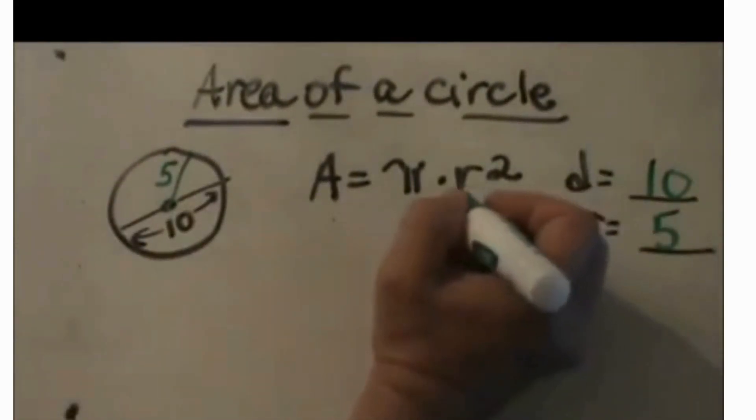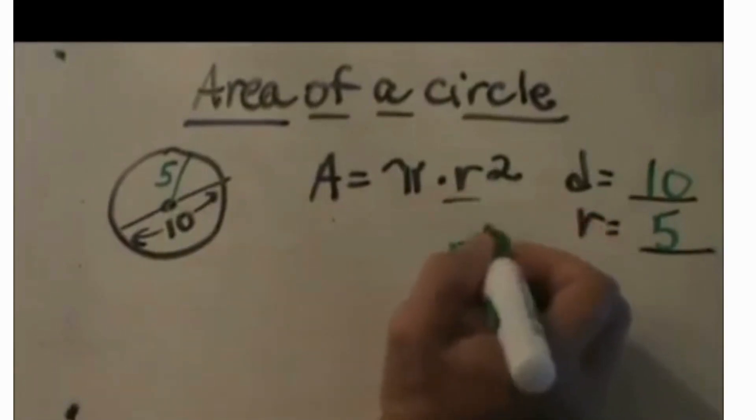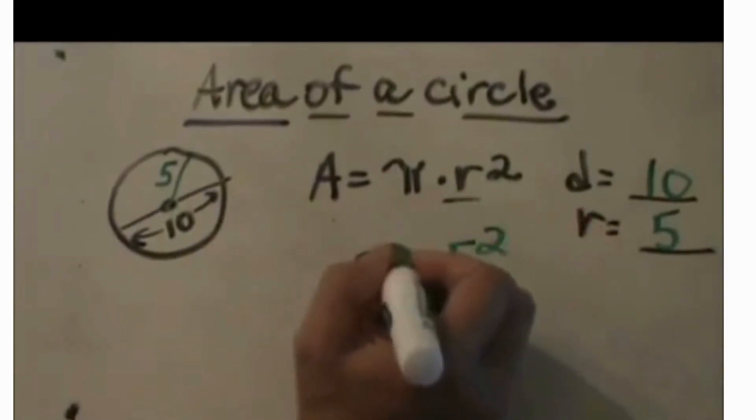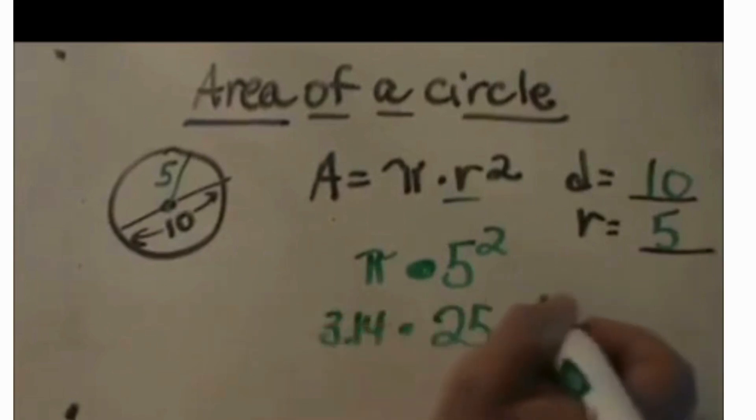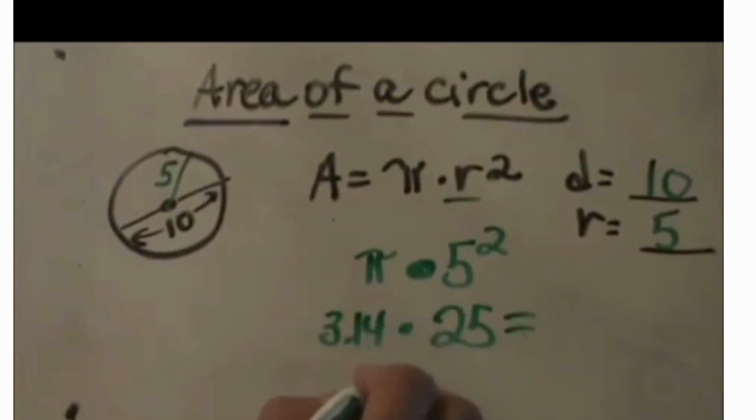Now let's plug in the radius as 5 squared and multiply that times pi. So 5 squared is not 10. It is 25 times 3.14. So the area of that circle is 78.5.